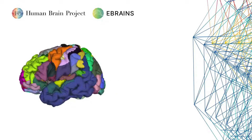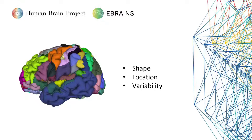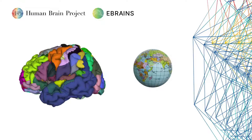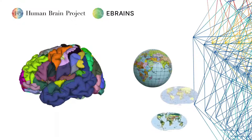Brain atlases define the shape, the location, and variability of brain regions. As spatial reference systems, they allow the navigation, characterization, and analysis of information on the basis of anatomical location within the brain. This is quite similar to an atlas of the Earth — each location in the given space is associated with a well-defined concept. For the Earth, these could be states or climate zones; for the brain, these are different types of brain regions.